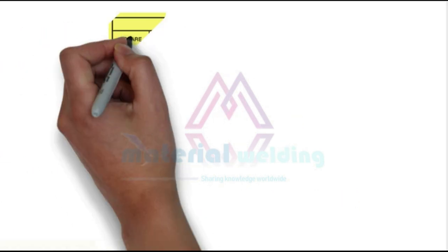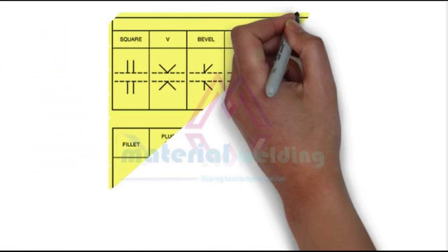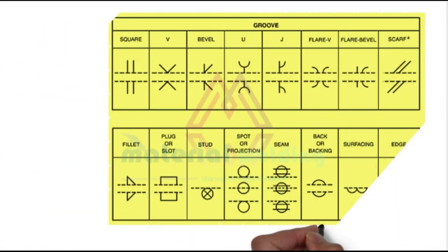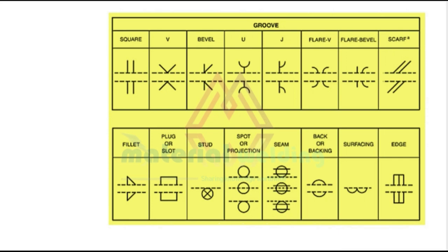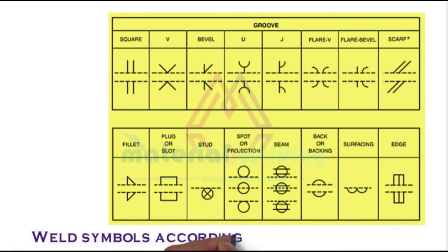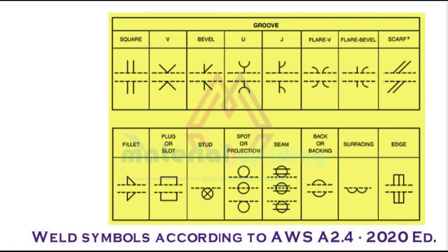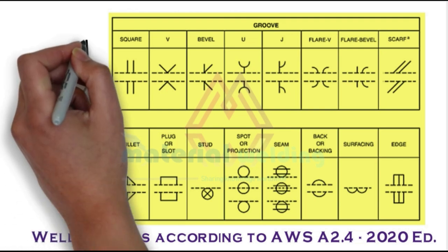Here the complete set of primary welding symbols according to AWS A2.4 2020 edition are shown. Please have a look to see each and every type of welding symbol. These symbols shall be drawn in contact with the reference line.